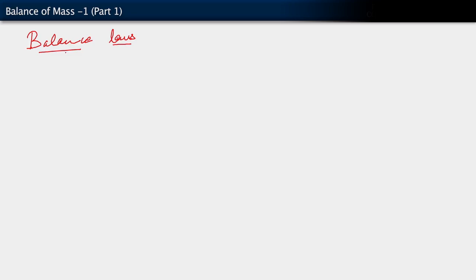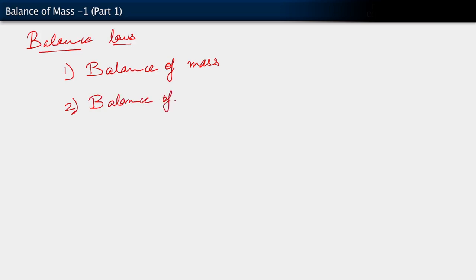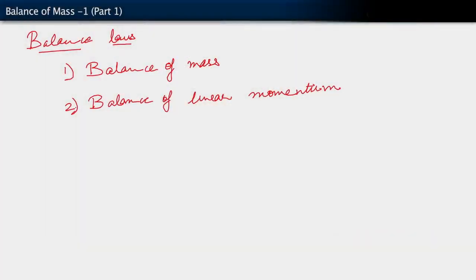You may recall from one of the very first segments, we talked about the following balance laws. We talked about the balance of mass. We talked about the balance of momentum, and when we talk of balance of momentum, we talk about two types: the balance of linear momentum — this is essentially our continuum representation of Newton's laws of motion — and then we also have the balance of angular momentum, which we can call 2a and 2b.